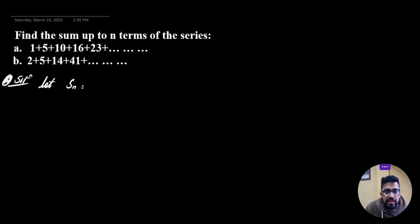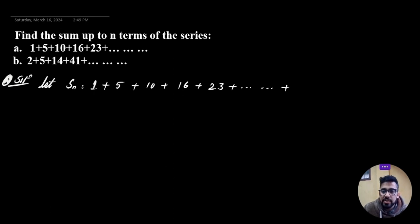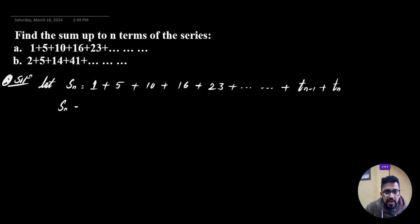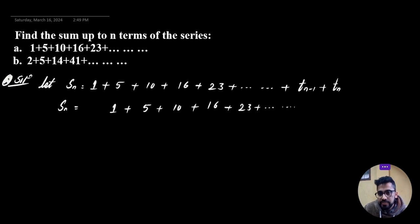The series is Sn = 1 + 5 + 10 + 16 + 23 + ... up to nth term, where the last term is tn. We shift this by one step: Sn is also written with the terms shifted, ending with tn-1 + tn.